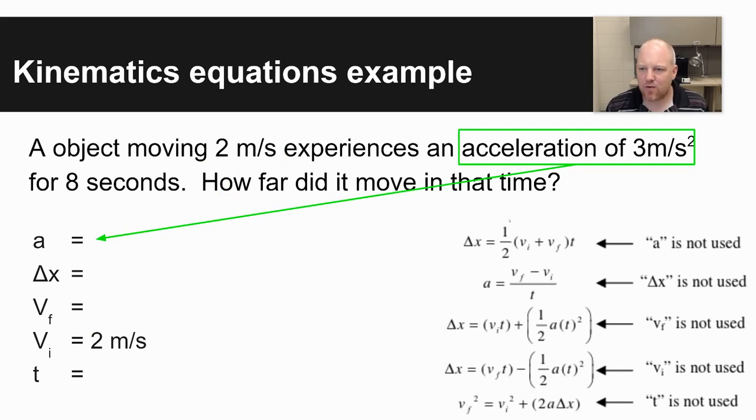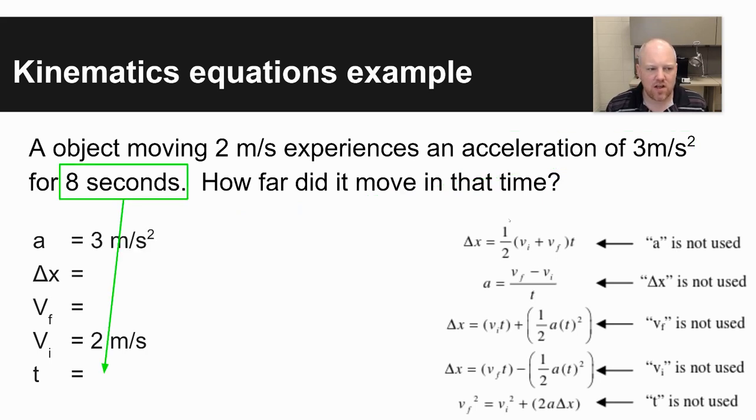Second, it says acceleration of three meters per second per second. Sometimes it will give you clues and say acceleration, which makes it helpful. Otherwise, I like to look at units. I see three meters per second per second, three meters per second squared, which is a unit for acceleration. Eight seconds time.